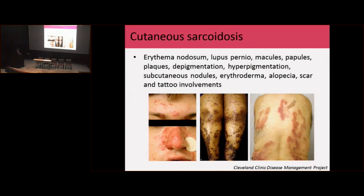Just a few pictures about cutaneous sarcoidosis. Sarcoidosis can affect many organs, and the skin is one of the most common. Erythema nodosum presents as red raised bumps usually on the legs. Lupus pernio can affect the bridge of the nose and is very tough to treat — whenever we see it, we have to be more aggressive because it requires higher doses of medications. Very interestingly, sarcoidosis has a predilection for scar tissue and tattoos. When trying to diagnose sarcoidosis, we always ask if the patient has scar tissue or tattoos and check for signs of inflammation there.